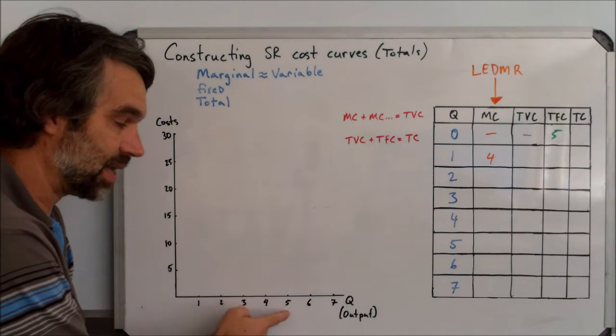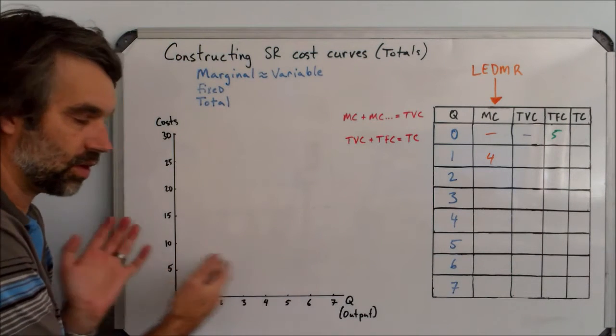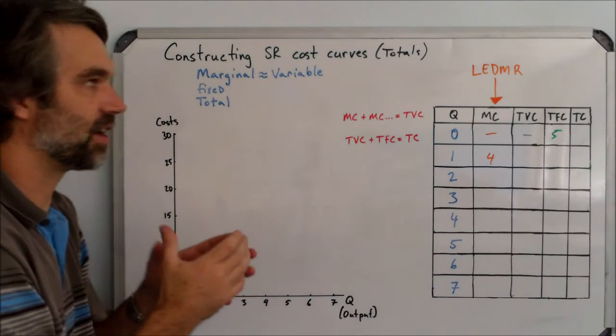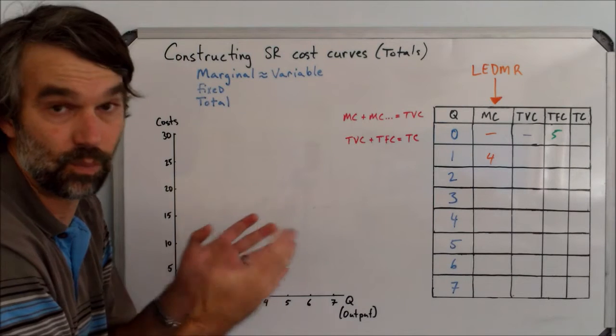So if I'm making five, what are the total of all the variable costs together? So they're similar concepts, but the variable cost is more inclusive.